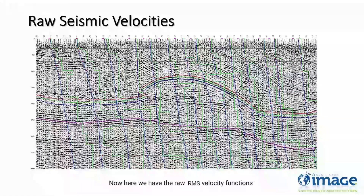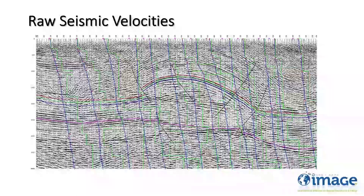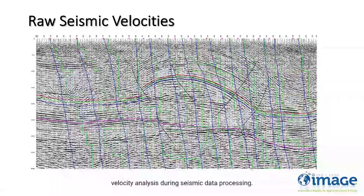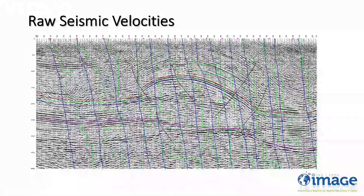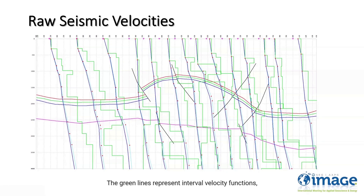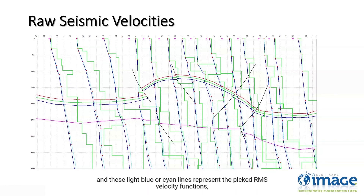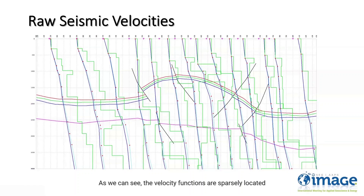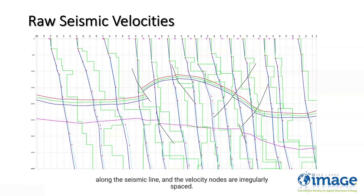Here we have the raw RMS velocity functions overlaid on the interpreted seismic section. These velocity functions have been picked through velocity analysis during seismic data processing. If we remove the seismic from the background, the blue lines represent the average velocity functions, the green lines represent the interval velocity functions, and the light blue or cyan lines represent the picked RMS velocity functions. The red dots are the velocity-time pair nodes. As we can see, the velocity functions are sparsely located along the seismic line, and the velocity nodes are irregularly spaced.